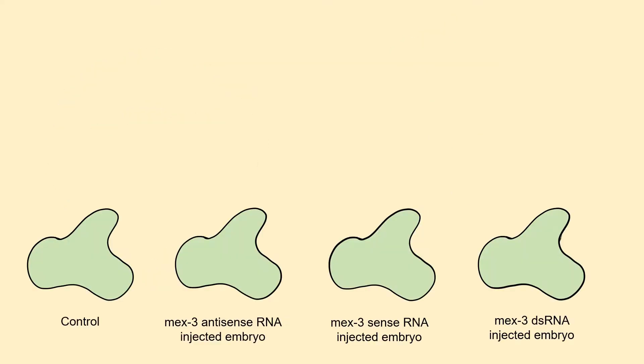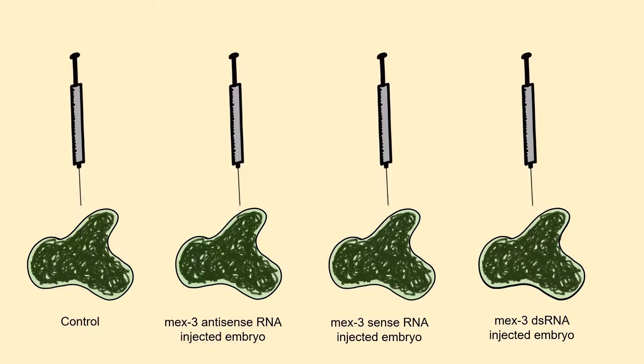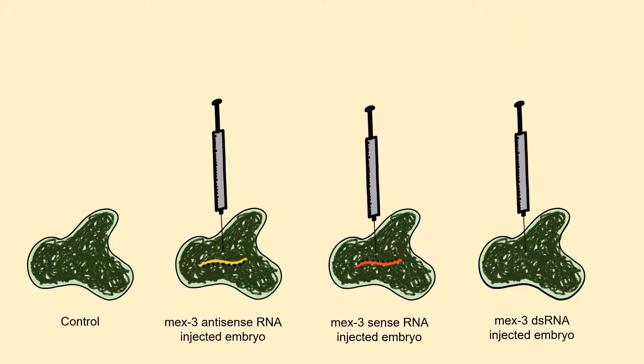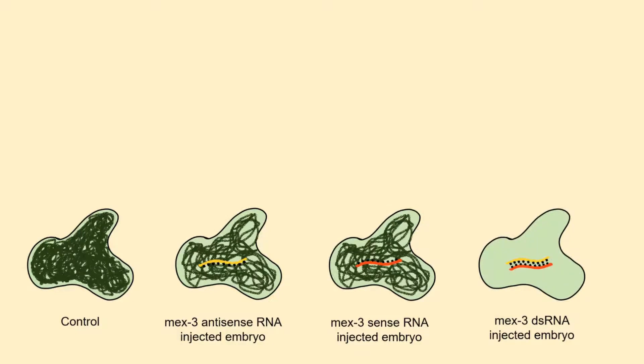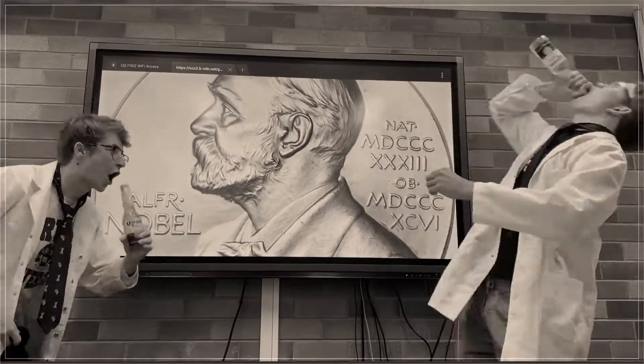To observe RNA interference on a more cellular level, Fire and Mello injected C. elegans embryos with a stain targeting an endogenous MEX3 mRNA. They then injected both purified MEX3 sense, antisense, and double-stranded RNA. They discovered that the embryos that were injected with the single-stranded RNA showed substantial retention of MEX3 mRNA, while the embryos injected with the double-stranded RNA showed no shine of the MEX3. This indicated that RNA interference silenced genes through the degradation of its respective mRNA transcripts.